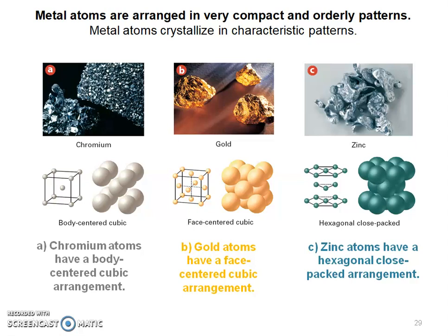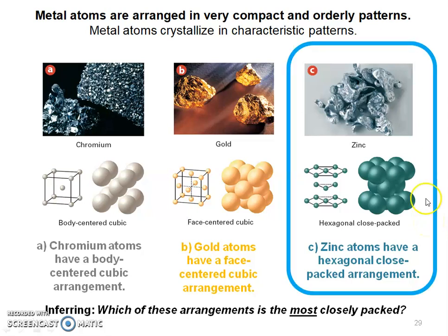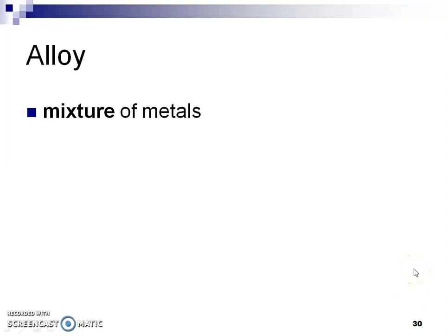Which of these arrangements is most closely packed? Hopefully you came up with zinc — because there's no space in between those atoms at all. Here, if you look at that cube, there's space in between those atoms. So every metal or alloy has what's called a pattern arrangement. What is an alloy? An alloy is just a mixture of metals. It's a metallic bond because we're mixing those electrons, but it's really just a mixture of metals — not really a chemical process, it's a physical process.